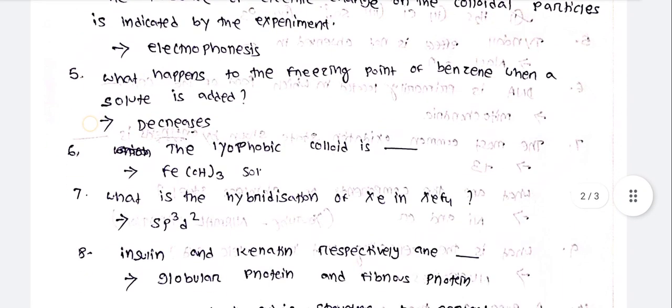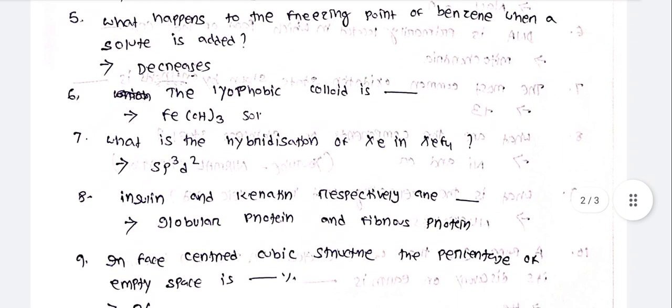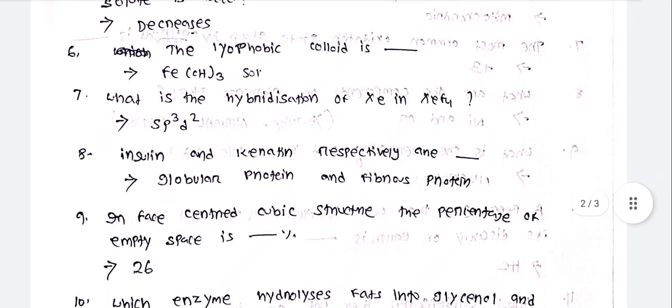What happens to the freezing point of benzene when a solute is added? It decreases. The lyophobic colloid example is Fe(OH)3 solution. The hybridization of Xe in XeF4 is sp³d².